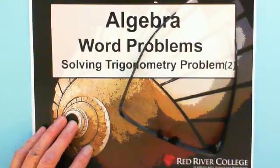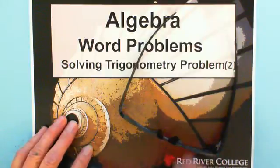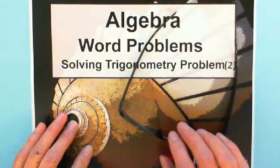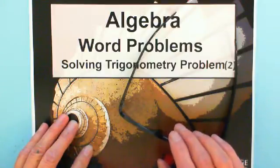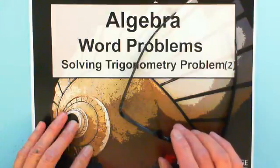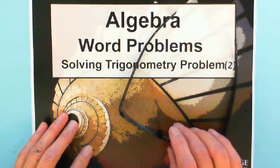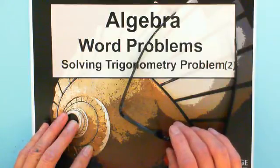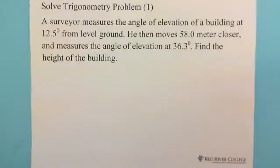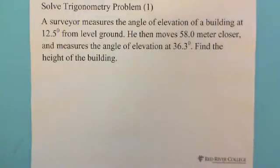Hi, welcome to Wiseguys solving trigonometry problem 2. This video has the same question as solving trigonometry problem 1, but I use a different method to show you. You can compare these two videos to see which way you feel easier. Let's look at the question. A surveyor measures the angle of elevation of a building at 12.5 degrees from level ground. He then moves 58.0 meters closer and measures the angle of elevation at 36.3 degrees. Find the height of the building.